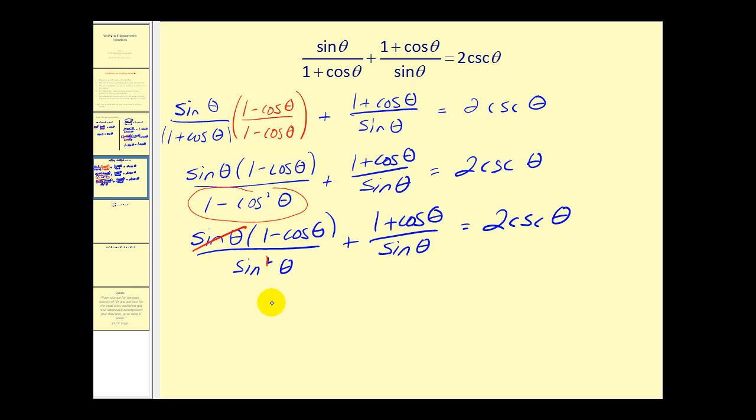So notice we have one plus one. That would give us two. And then we have a negative cosine theta plus cosine theta. That would equal zero. So we have a two in the numerator, sine theta in the denominator. And in fact, two over sine theta is equal to two cosecant theta. And we have our verification. Remember that one over sine theta is equal to cosecant theta.